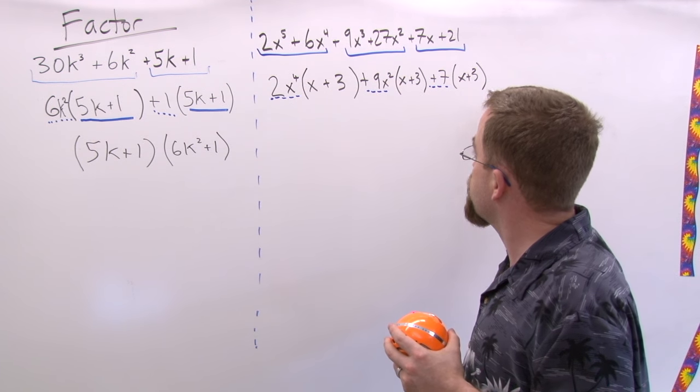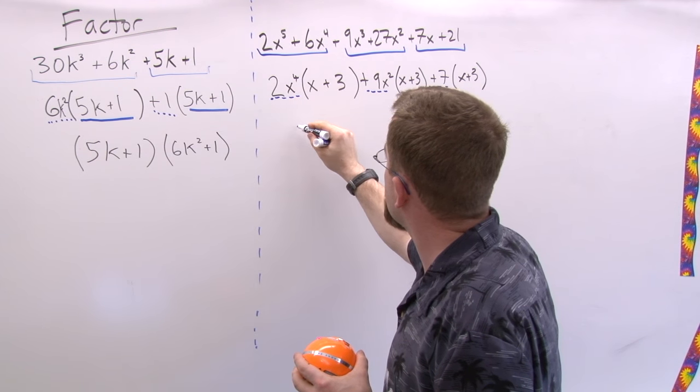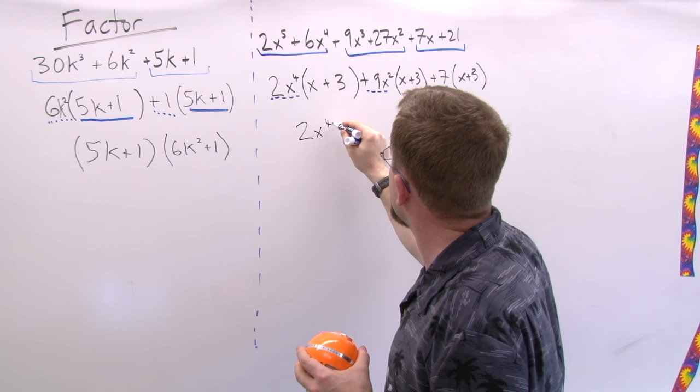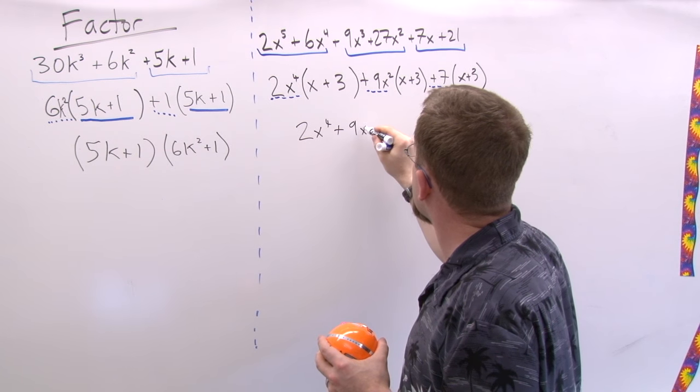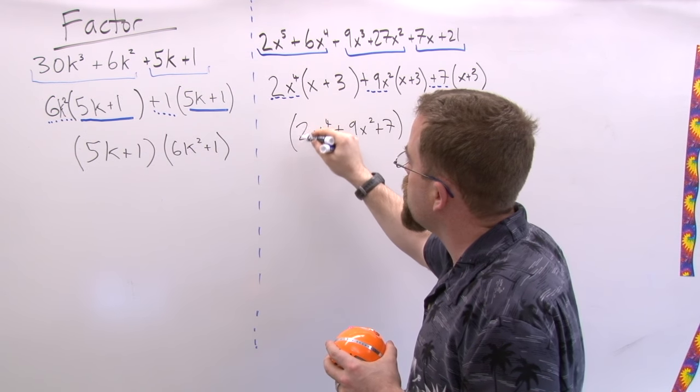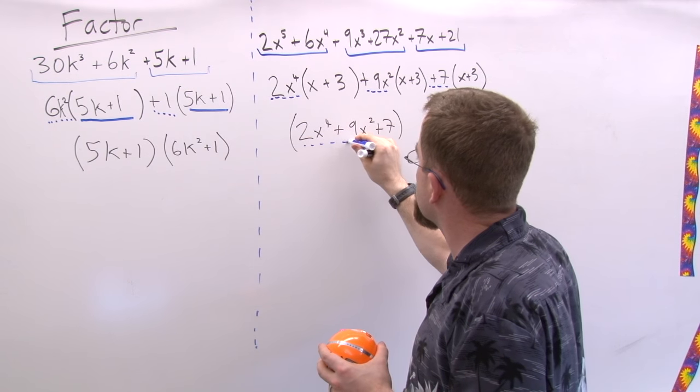So I'm allowed to write 2X to the fourth plus 9X squared plus 7. That was me collating all these ones that I've given a dotted underline into one term, and I have an X plus 3.